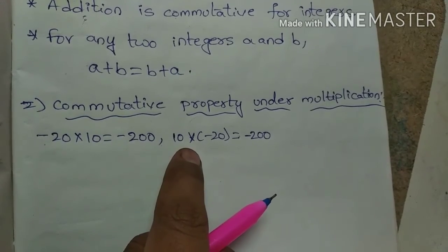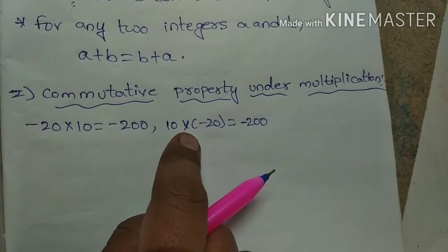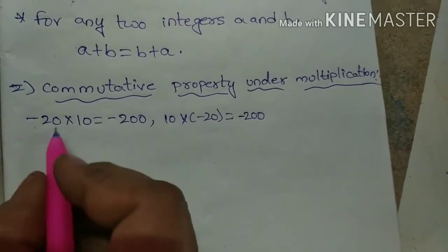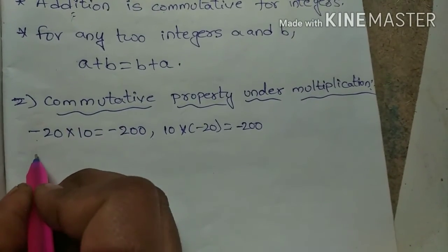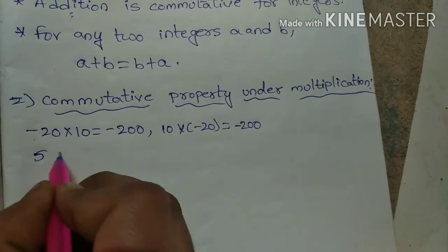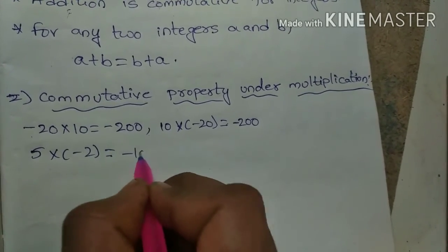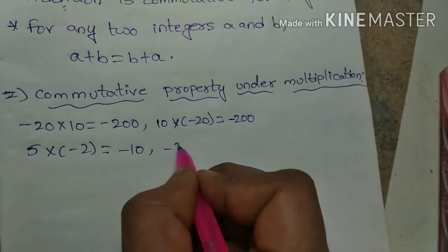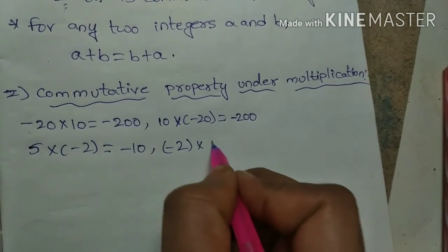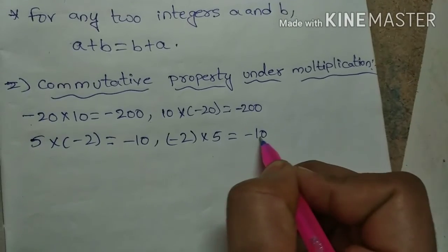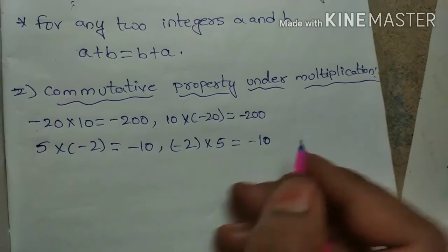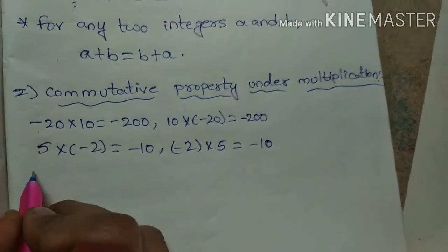Think of an example: 5 × (-2) equals -10. Next, -2 × 5. If we change the order, the result will not be changed. When the order changes, is there any change? No.